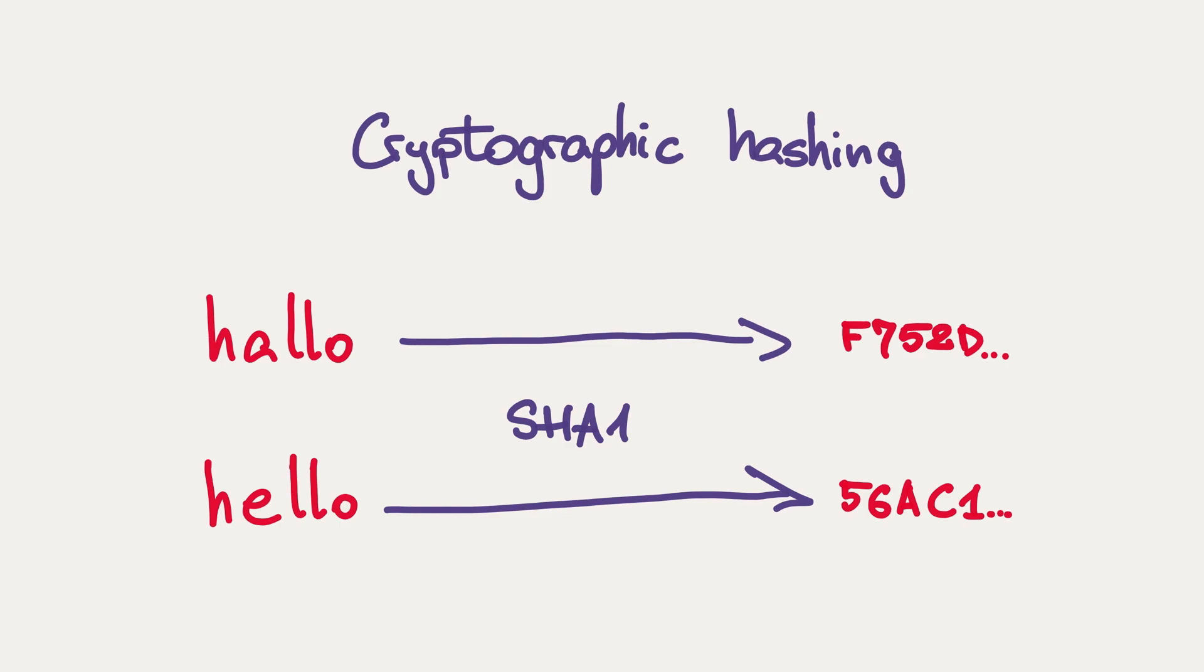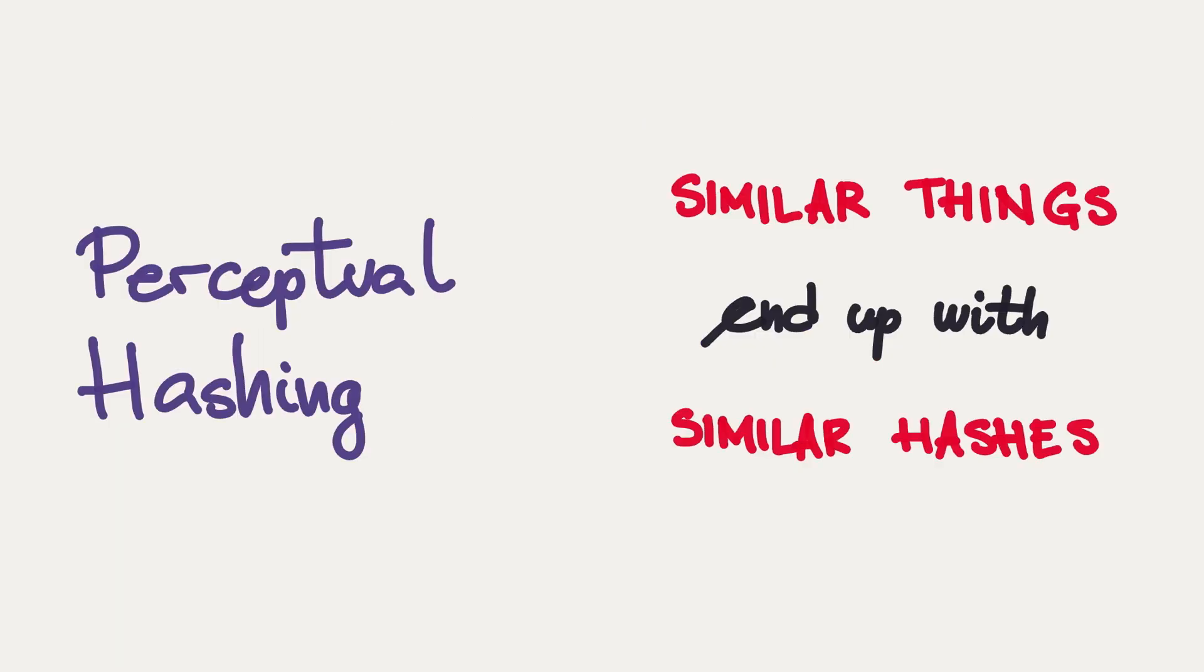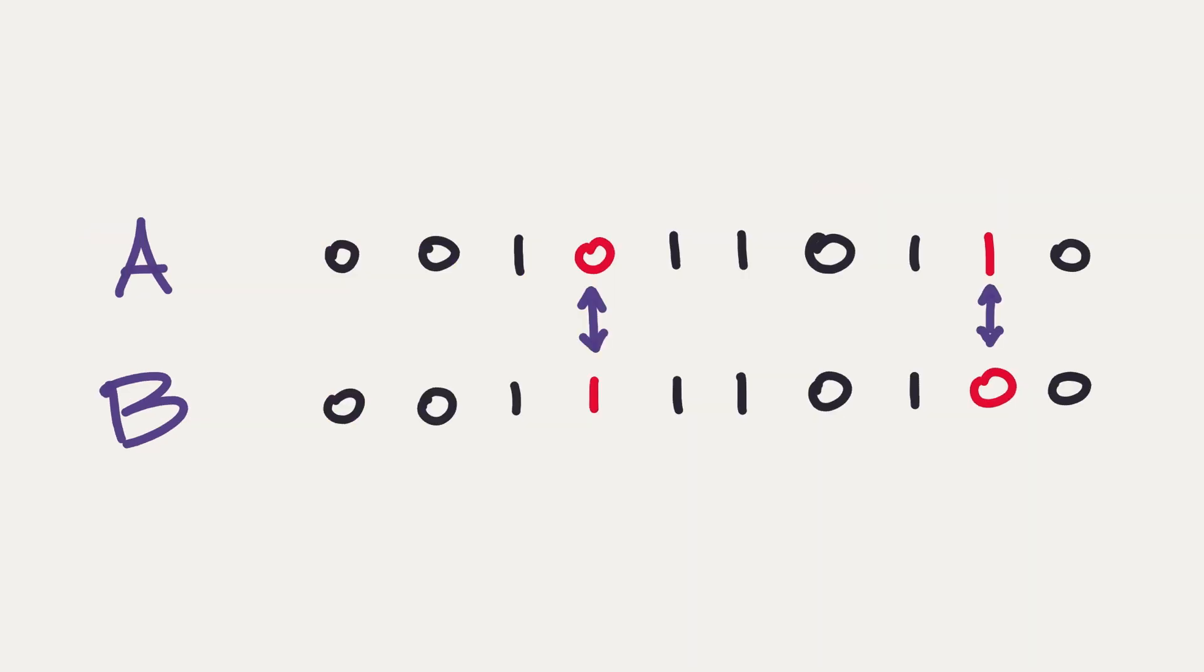And there is a family of algorithms which answers exactly this demand. They're called perceptual hashes. And they correspond to how we humans perceive the world. Small changes in the input result in small changes in the output. And by similar hashes, I mean hashes which differ on the minimal number of positions when they're presented as bit vectors.